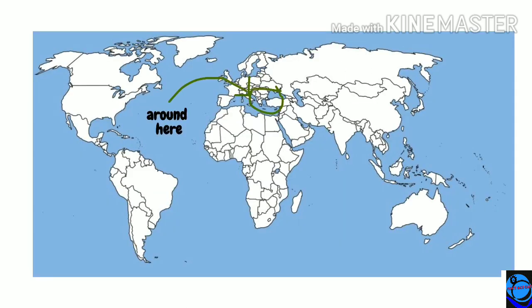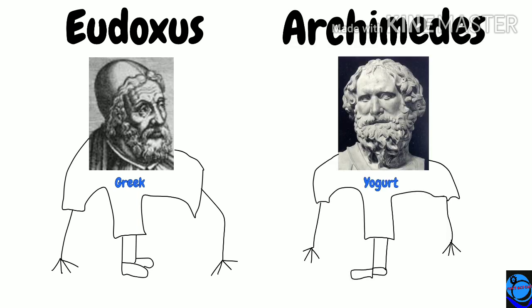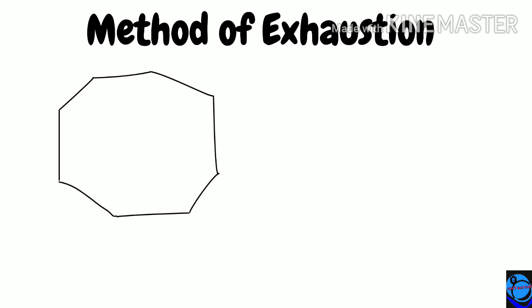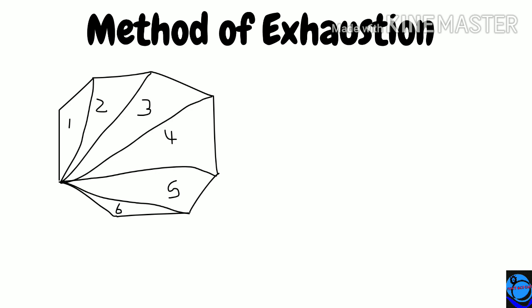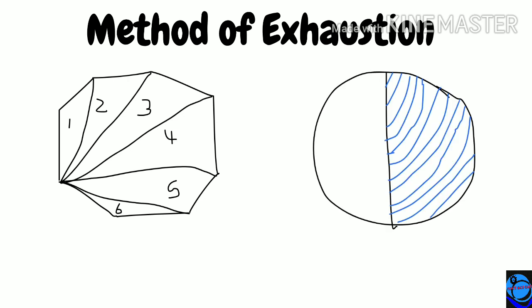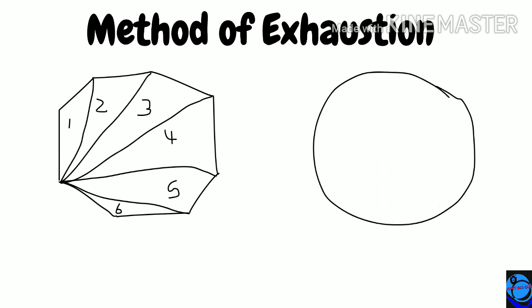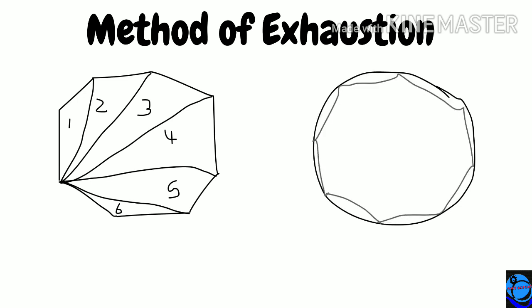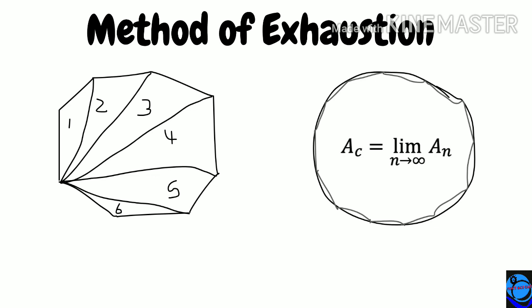Around the same time in ancient Greece, prominent figures Eudoxus of Cnidus and Archimedes proved areas of shapes through the method of exhaustion. For regular polygons like an octagon, they split it into triangles, found each area, and added them up. Circles are a special case since they can't be directly split into triangles, so they inscribed a polygon and gradually increased the number of sides. The area of the circle equals that of the inscribed polygon only with infinite sides. From this, we got the concept of limits and the idea of the infinite process.